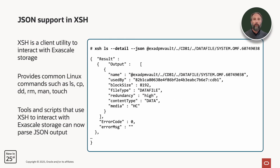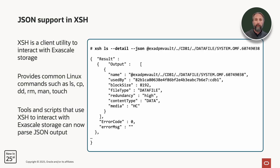JSON support in XSH: the Exascale shell, or XSH, is a client utility to interact with Exascale storage. It provides common Linux commands such as ls, cp, rm, and touch. Tools and scripts that use XSH to interact with Exascale storage can now parse JSON output.